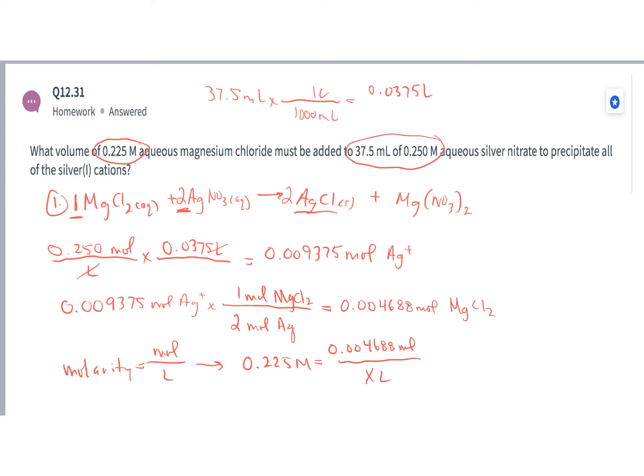So X is my volume. I'll multiply and then I'll divide to get a volume of approximately 0.0208 liters or 20.8 milliliters that I'd have to add to solution.